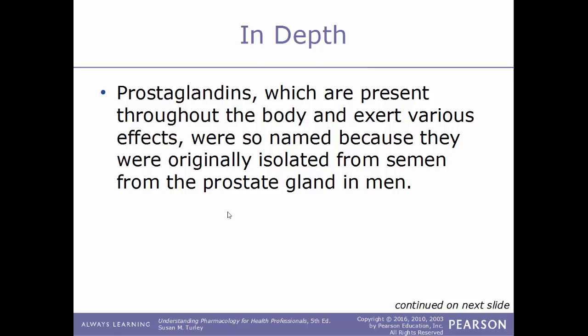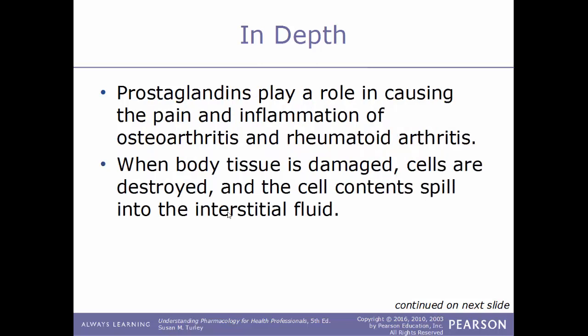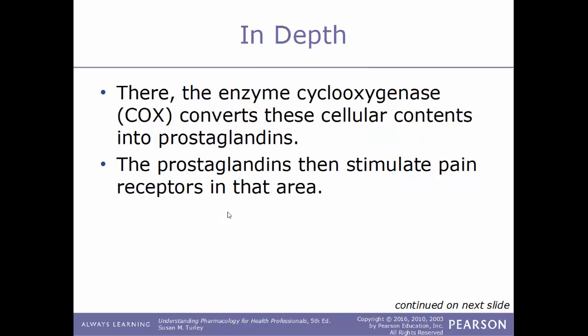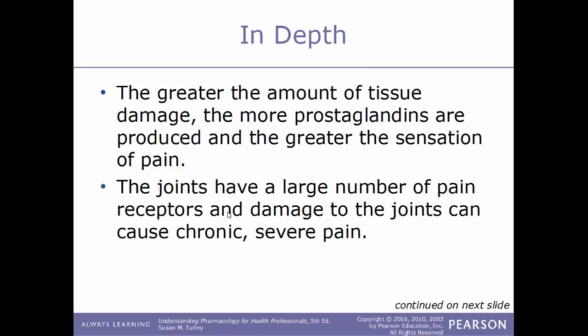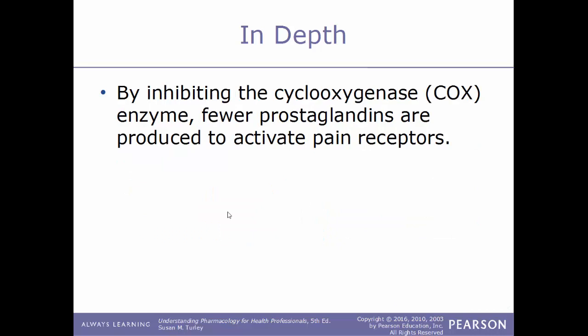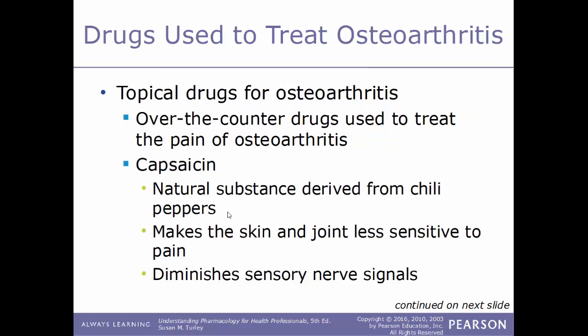Prostaglandins are present throughout the body and exert various effects, but were originally named because they were first isolated from semen in the prostate gland. They play a role in causing the pain and inflammation of osteoarthritis and rheumatoid arthritis. When body tissue is damaged, cells are destroyed and their contents spill into interstitial fluid. The enzyme cyclooxygenase, or COX, then converts these cellular contents into prostaglandins, which stimulate pain receptors. The greater the tissue damage, the more prostaglandins are produced. By inhibiting the COX enzyme, fewer prostaglandins are produced and fewer pain receptors are activated.